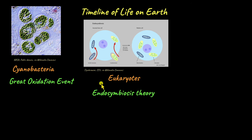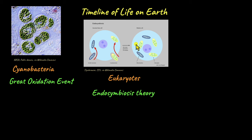Eukaryotes evolved through the endosymbiosis theory. An early prokaryotic organism engulfed a cyanobacterium, which eventually evolved into the chloroplast. The early prokaryotic cell also engulfed an aerobic bacterium, which eventually became the mitochondria. From eukaryotes, two lineages developed — one evolved into plants and the other into animals. The evolution of eukaryotes allowed cells to compartmentalize their functions, making cells more complex and paving the way for multicellular organisms.